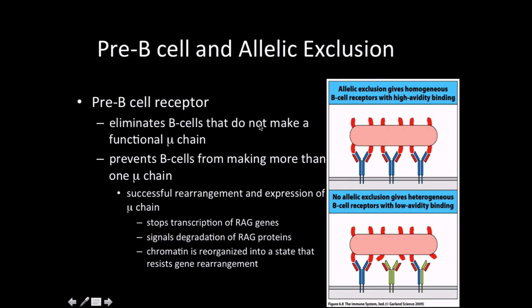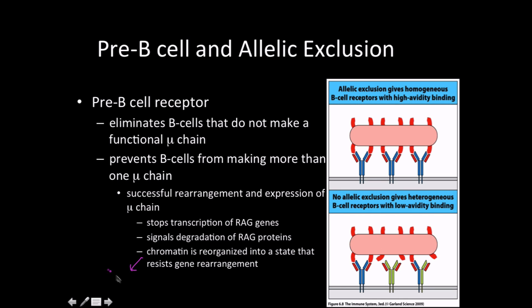When we talked about maternal and paternal chromosomes in pairs, notice we try one chromosome, and if it works great, and if not we try the other of the pair. This is the concept of allelic exclusion. It prevents us from making more than one mu chain, but also ensures we eliminate any that don't make a functional mu chain. At the mechanistic level, chromatin is reorganized into a state that resists further gene rearrangement after we've produced a functional protein. If it passes the surrogate light chain test, we stop transcription of RAG genes, break down all the RAG protein, and condense the chromatin—adding methyl groups and performing deacetylation on our DNA.